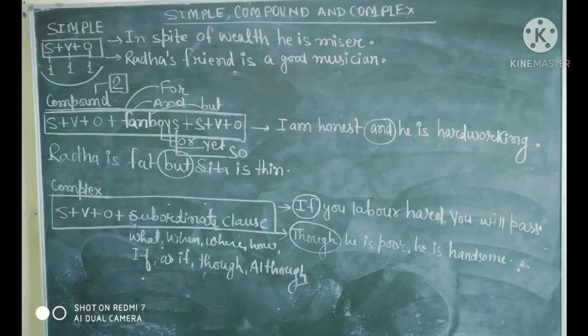Now, we are going to talk about the simple sentence, compound sentence and complex sentence. In the simple sentence, as you can see on the top of the board, it is written subject plus verb plus object. That means simple sentence mein ek subject hoga, ek verb hoga, ek object hoga. Example: In spite of wealth, he is miser. Next, Radha's friend is a good musician. Very simple way to identify a simple sentence: simple sentence mein koi bhi conjunction nahi hoga.